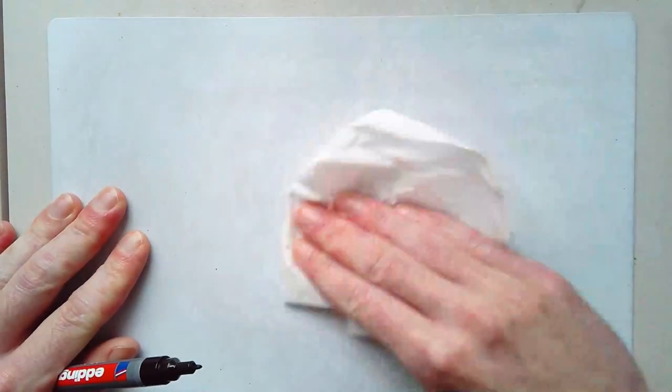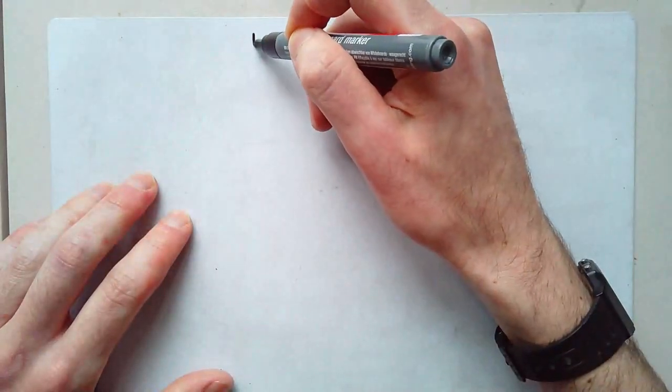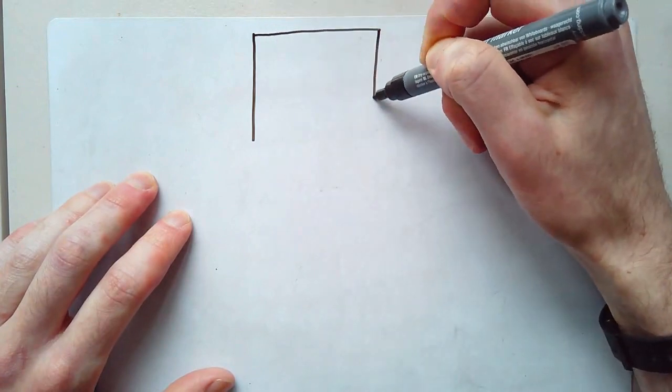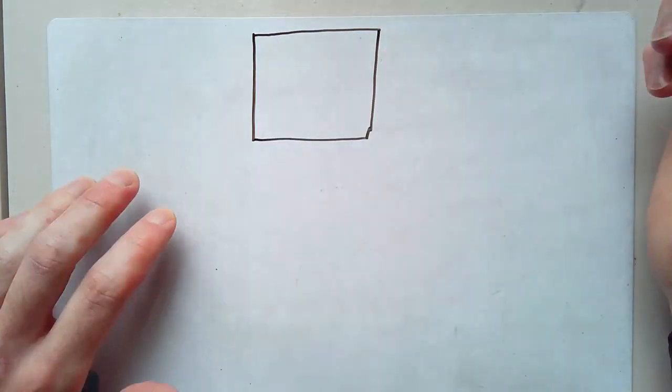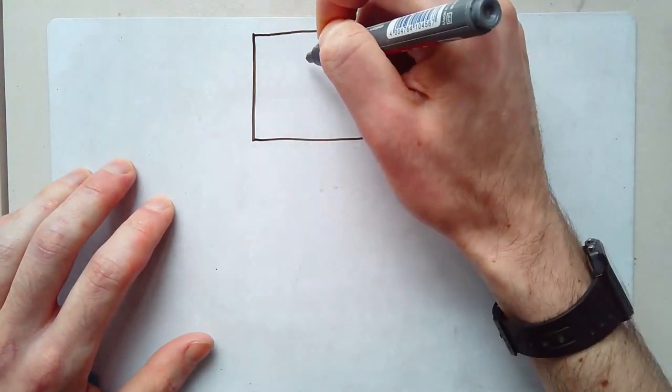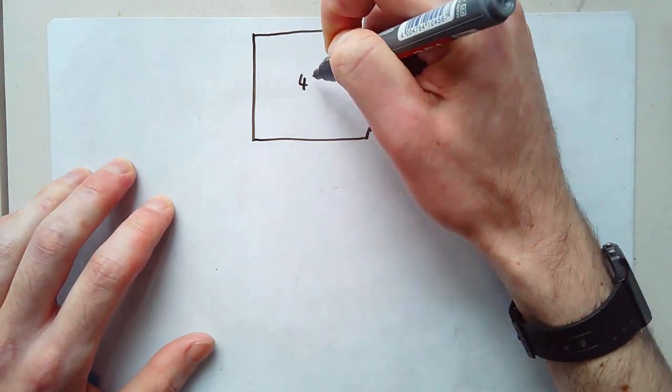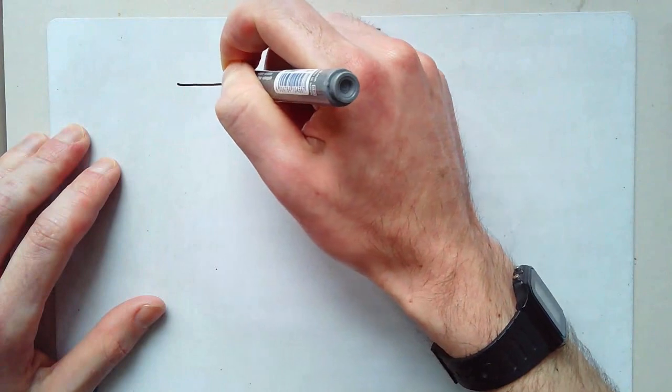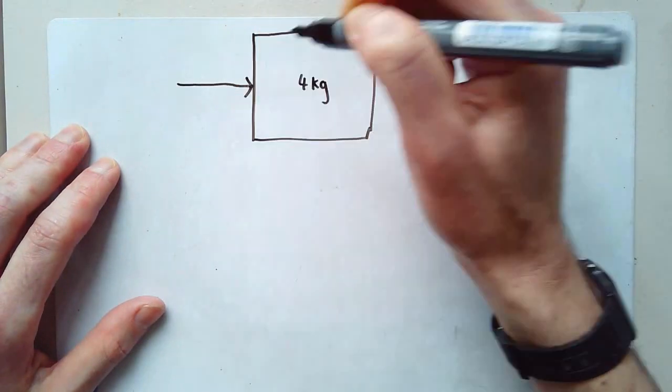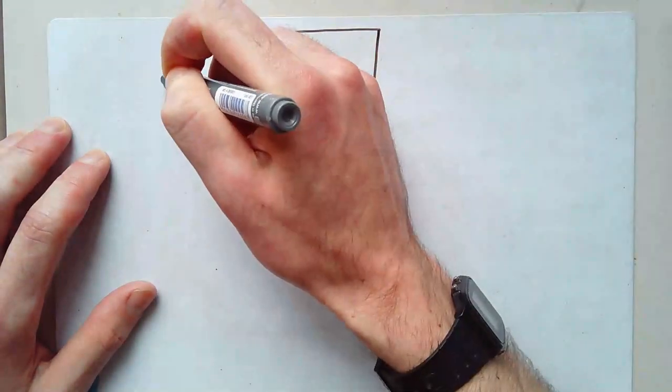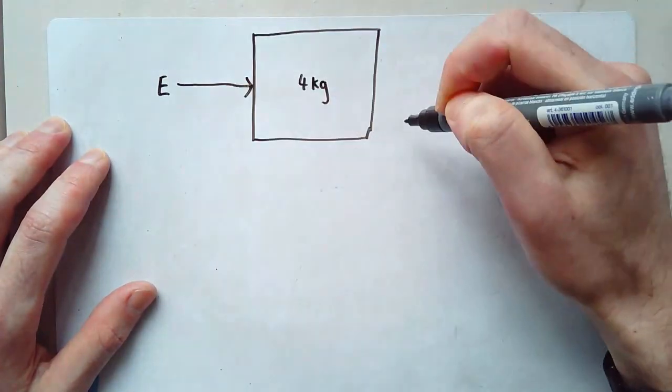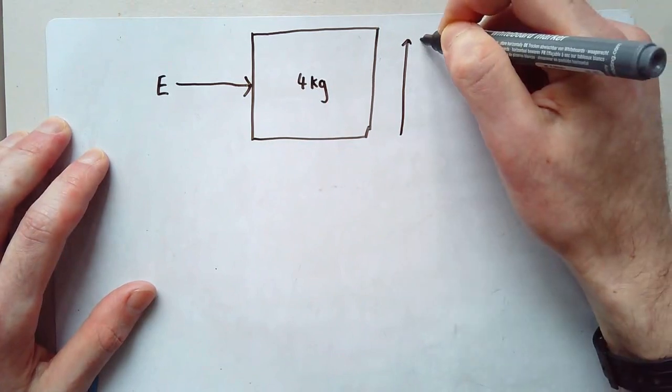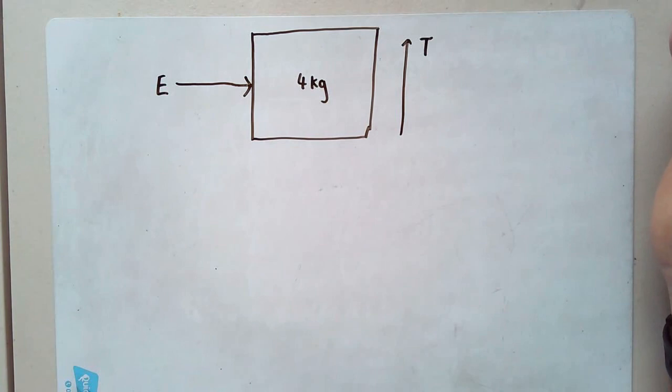So let's imagine that I've got a block of some kind of material. It doesn't really matter what the material is for the minute. And let's say my block has a mass of four kilograms. Now I put thermal energy into it, which we could call E. And I expect that the temperature T will go up. That's what I'm hoping will happen.